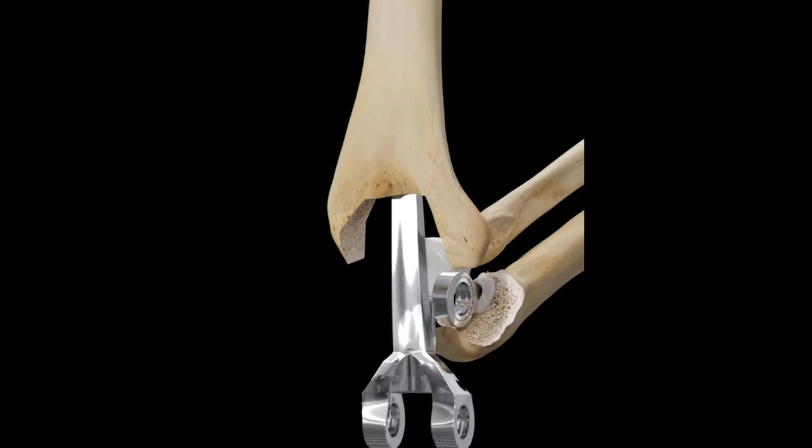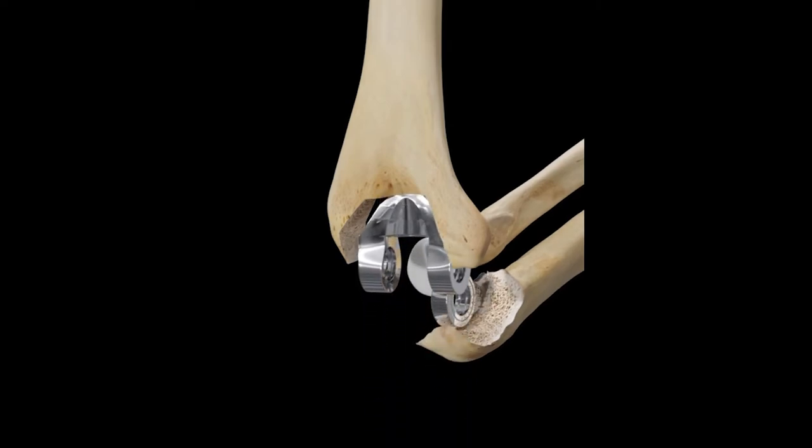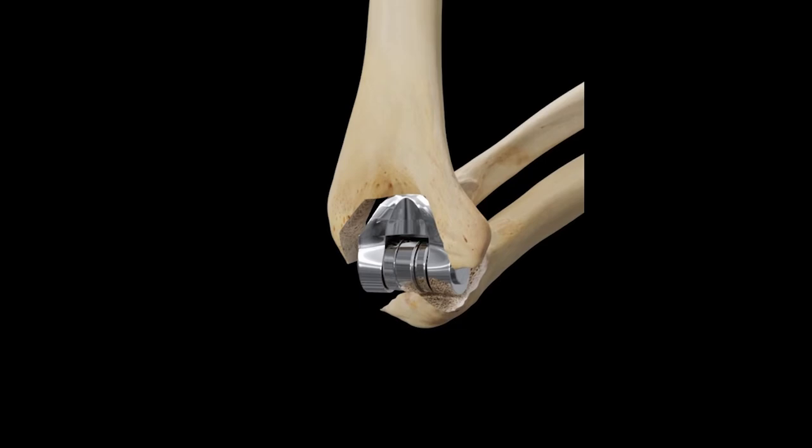The anterior distal humerus is then prepared for a bone graft by taking it down to the subcortical bone.